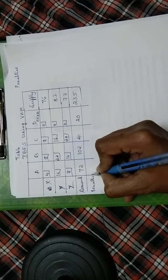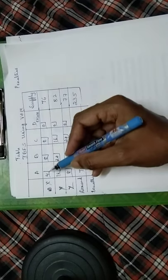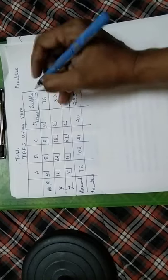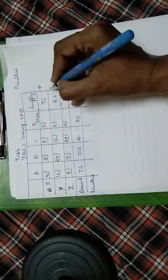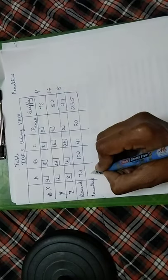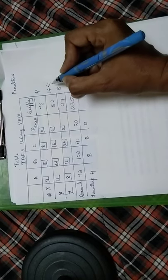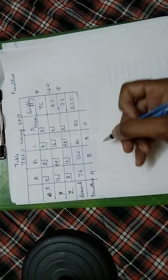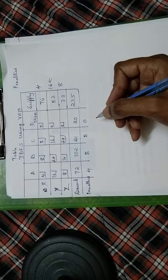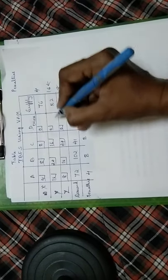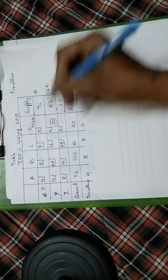We now calculate penalties by taking the difference between the two smallest costs in each row and column. For example, 4 minus 0 is 4; 16 minus 0 is 16; and so on, giving penalties of 4, 8, 8, 8, and 0. The highest penalty is identified, and we allocate to the least cost cell in that row or column — allocating 20 to the dummy column, leaving 0 there and 62 remaining.